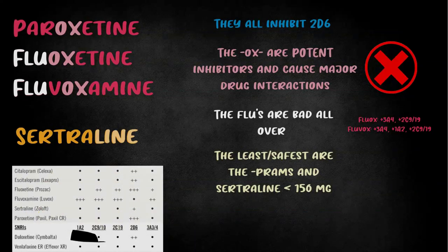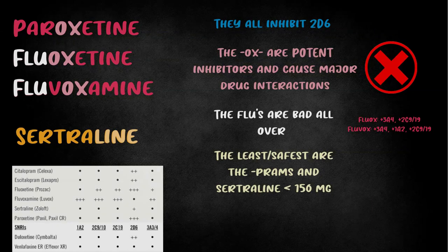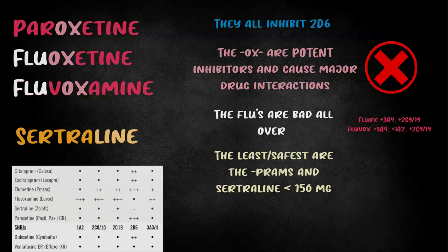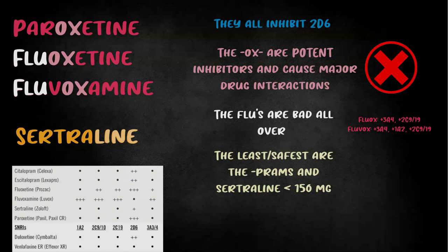Let's go back to the chart — we now basically have it memorized. Fact one: they all inhibit 2D6, so one check mark down the 2D6 column. Fact two: the oxes are problematic — picture that big red X in the name — so three check marks on fluoxetine and three check marks on paroxetine. Fact three: the flus are bad all over — 'flu' is three letters, so 3A4. Fact four: reminds us of the drugs on the safer end.